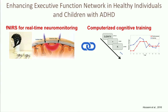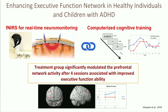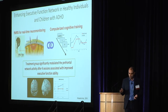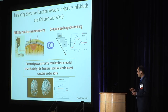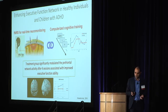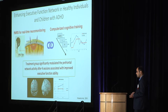We're specifically focusing on working memory training. We tested this first in healthy individuals and found very interesting results. After four sessions of intervention — comparing a real intervention group versus a control group — we found significant modulation of brain activity in the prefrontal cortex, which is involved in working memory and executive functions, along with improved performance compared to controls. We've also been testing this in children with ADHD and have some very promising preliminary data.